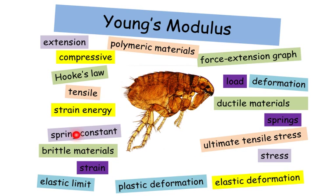These are some of the key words that we're going to be looking at during this topic: extension, compressive, Hooke's law, tensile, strain energy, spring constant, brittle materials, strain, elastic limit, plastic deformation, elastic deformation, stress, ultimate tensile stress, springs, ductile materials, load, deformation and force extension graphs, and not forgetting polymeric materials.